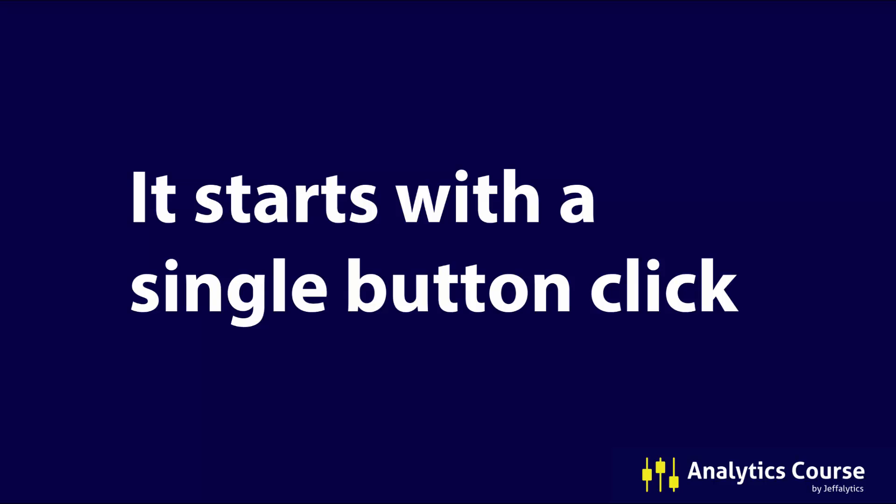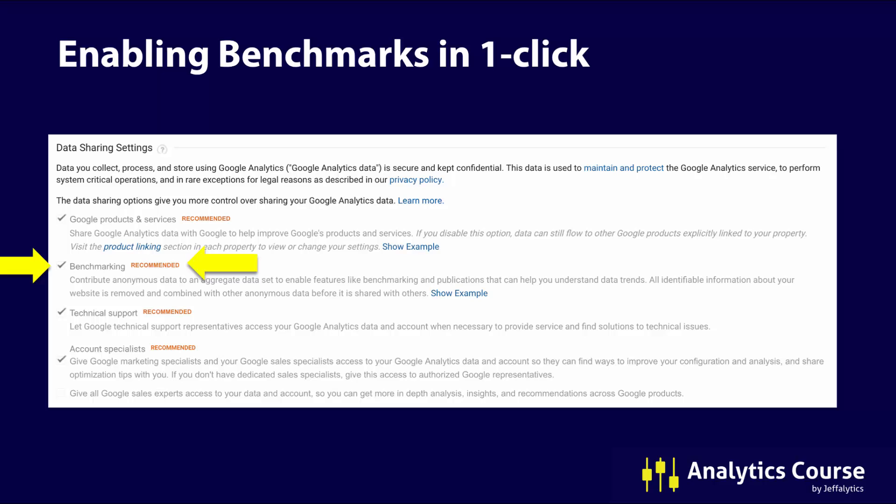It really does start with just a single button click. All you need to do is go into the admin section of your Google Analytics account at the account level and check the box saying that you want benchmarking enabled. If you look at this screenshot it's grayed out — I don't have admin access on this account, which is actually the Google Analytics demo account from the Google Store. I don't have the ability to check that box, but somebody checked it for us so we're able to see this rich benchmarking data. If you see it's unchecked and you don't have the ability to check it, you'll want to talk to your account administrator.